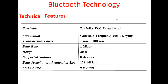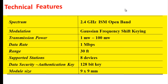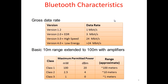The technical features of Bluetooth: the spectrum is the 2.4 gigahertz ISM open band; the modulation technique is GFSK — Gaussian Frequency Shift Keying; transmission power is about 1 milliwatt to 100 milliwatt; data rate is 1 megabit per second; range is 30 feet; supported stations are 8 devices; data security uses 128-bit keys; and module size is 9 by 9 millimeters.